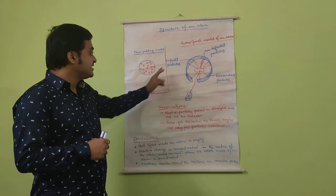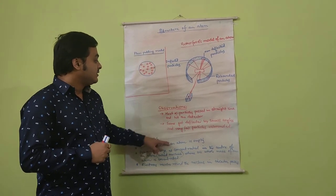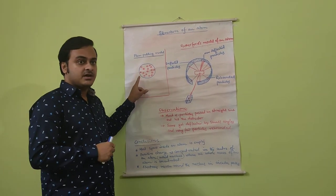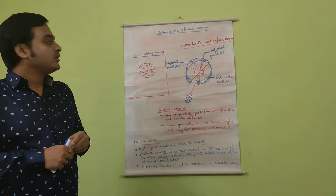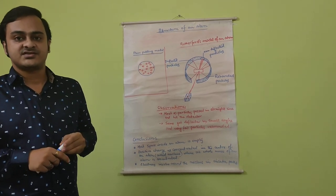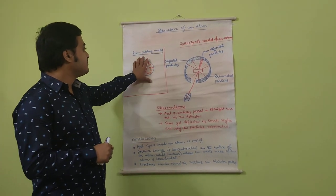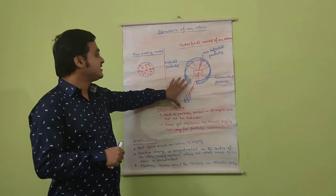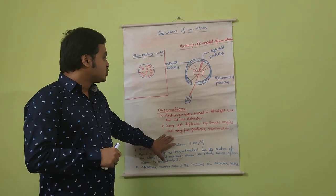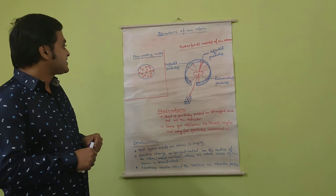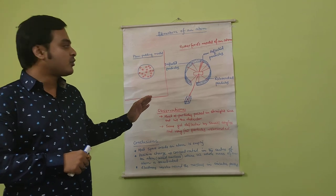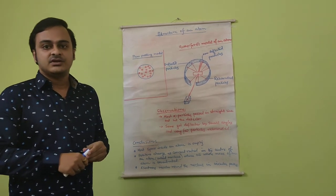From studying this, Rutherford came to the inference that the plum pudding model, which was used earlier, is inaccurate. Even though Rutherford's model has certain drawbacks, we will discuss it in our next section. So what have we learned from this? The plum pudding model, the drawbacks of the plum pudding model, what led other scientists to work on alternative models of the atom, and the conclusions associated with the Rutherford atomic model. We shall discuss further regarding the drawbacks of the Rutherford atomic model in the next video. Thank you. That's all for today.